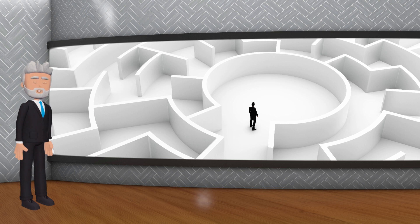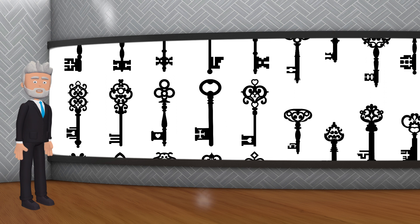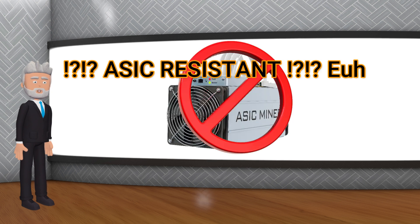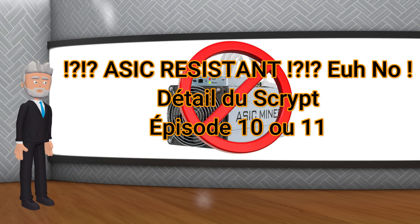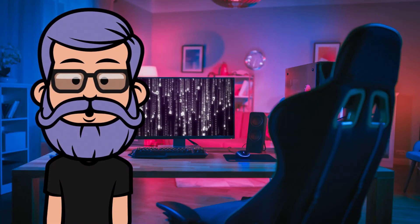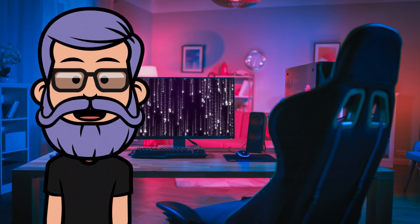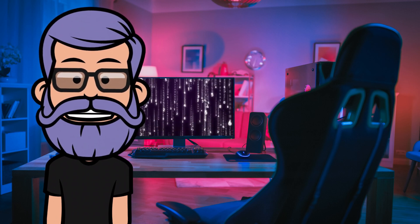Le Scrypt est comme un labyrinthe, avec de nombreux chemins et des portes verrouillées. Pour résoudre ce labyrinthe, vous devez non seulement trouver le bon chemin, mais aussi déverrouiller les portes en utilisant les bonnes clés. Le Scrypt nécessite beaucoup de mémoire pour stocker les clés et les chemins, ce qui rend difficile l'utilisation de machines spécifiques ASIC. On pourrait dire que les mineurs de crypto jouent à des jeux toute la journée afin de peut-être gagner le droit de traiter le prochain bloc de transaction.